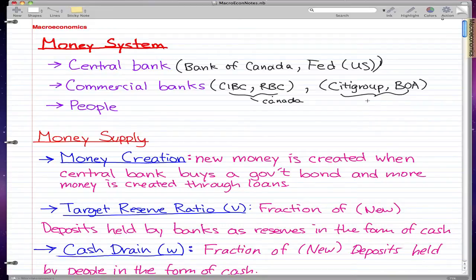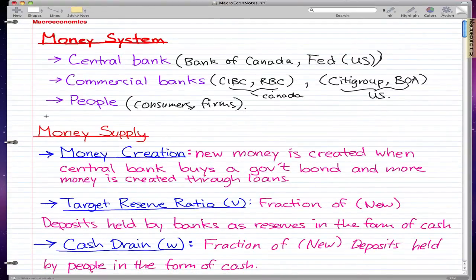That's what they say on Wikipedia. So it's US banks. And people are just people—they're you and me, consumers and firms. You know, firms like other than banks, so BMW or something. So they would consist or make up the people in the money system.